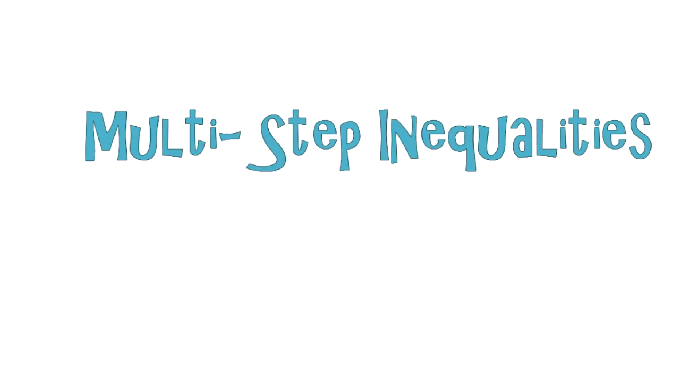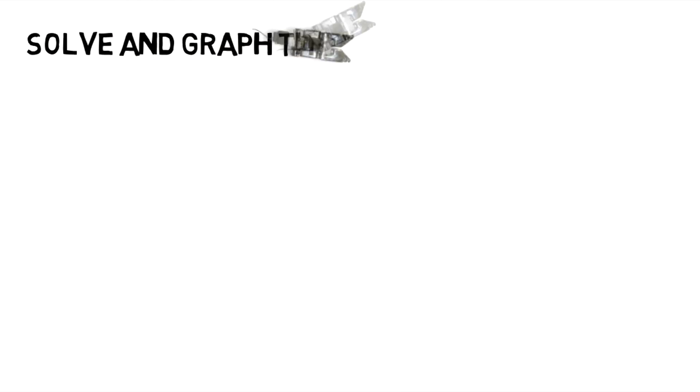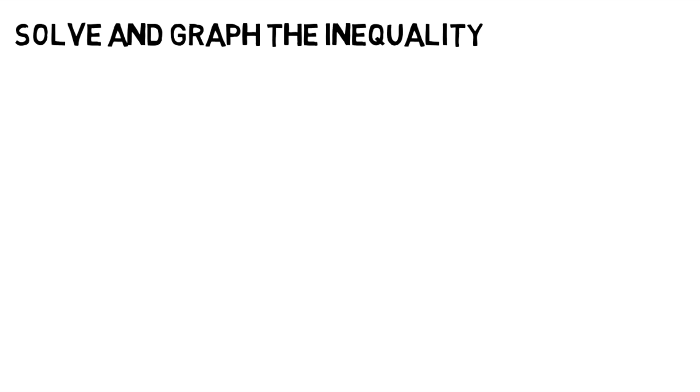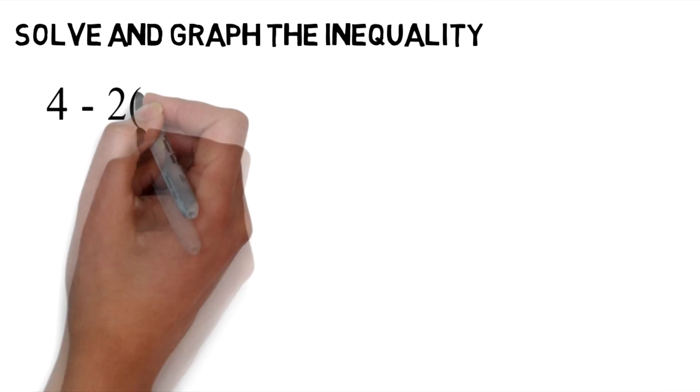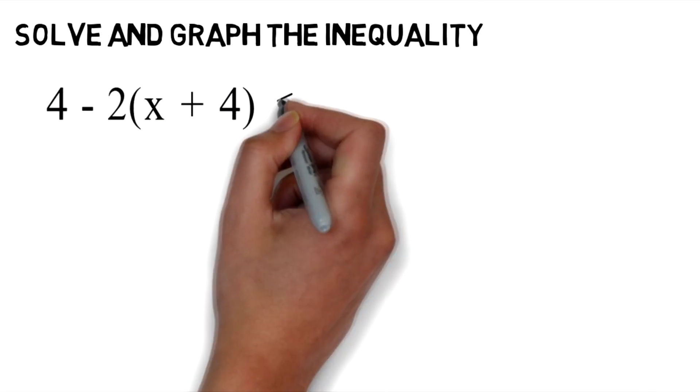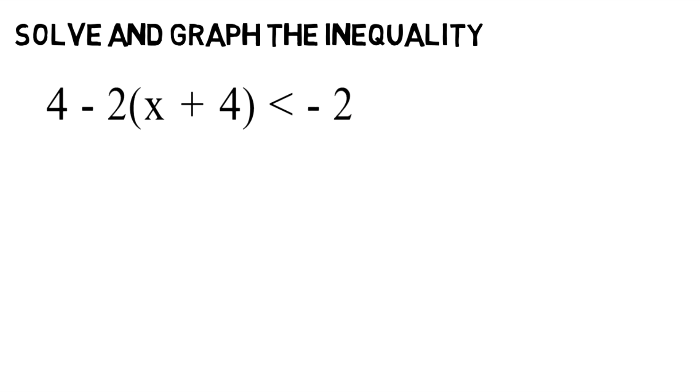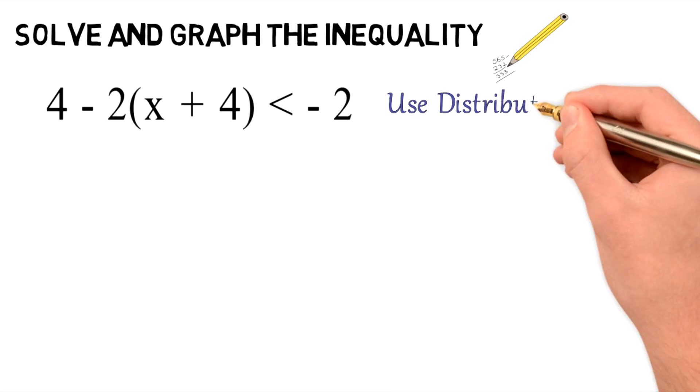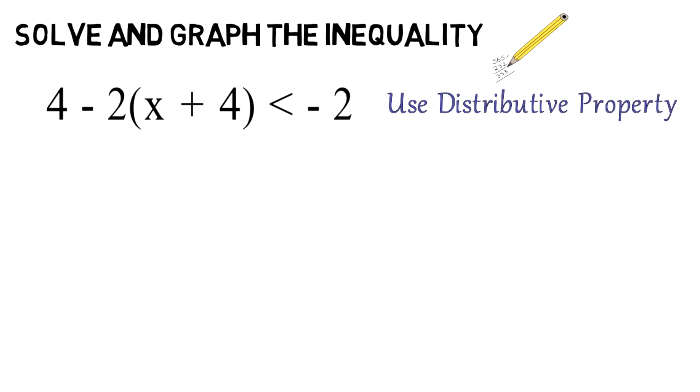Multi-step inequalities. Solve and graph the inequality: 4 minus 2 times the quantity x plus 4 is less than negative 2. I'd like you to try to work this out right now for yourself.